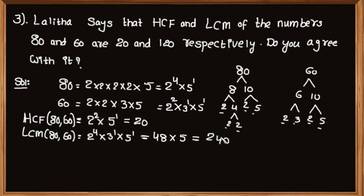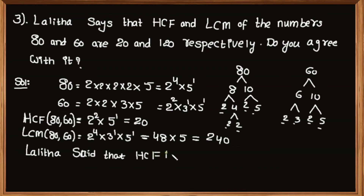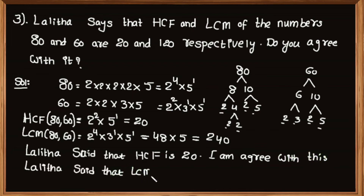After simplification we get 48 multiplied by 5, that is equal to 240. According to Lalitha, HCF and LCM are 20 and 120. I agree with Lalitha's answer for HCF, which is correct. But I disagree with Lalitha's answer for LCM, which is not correct — the actual LCM is 240.